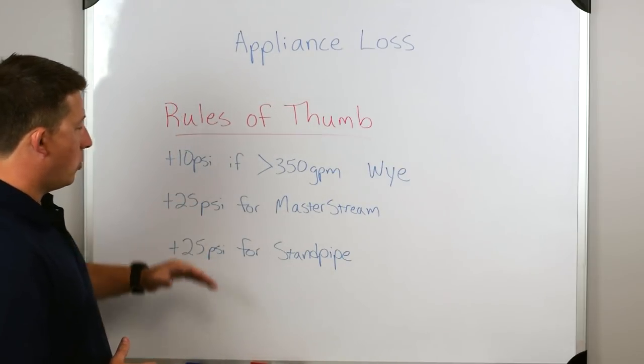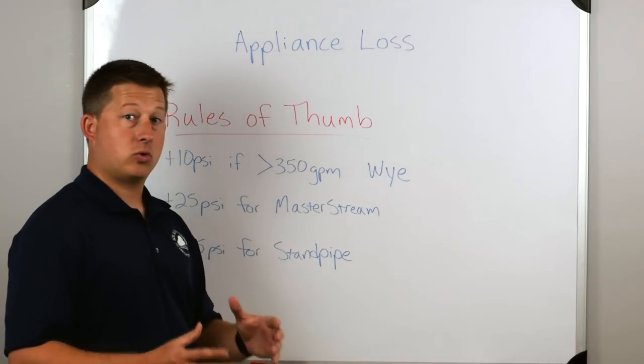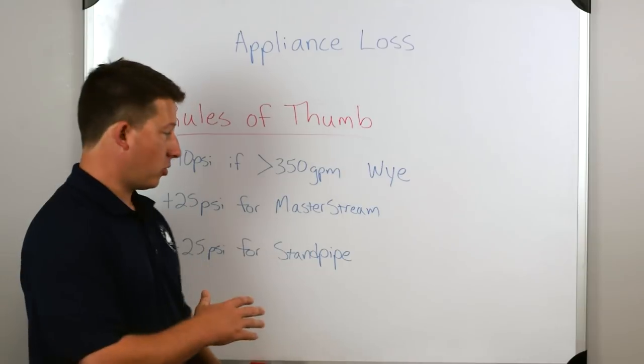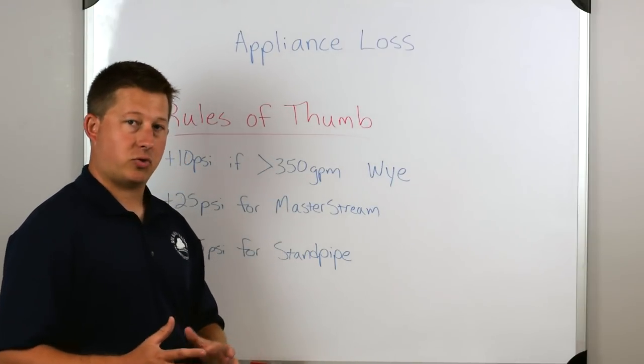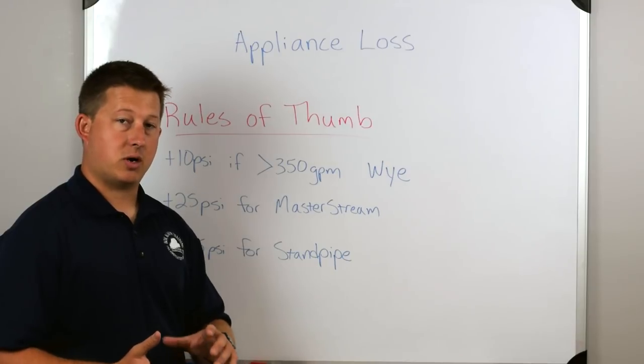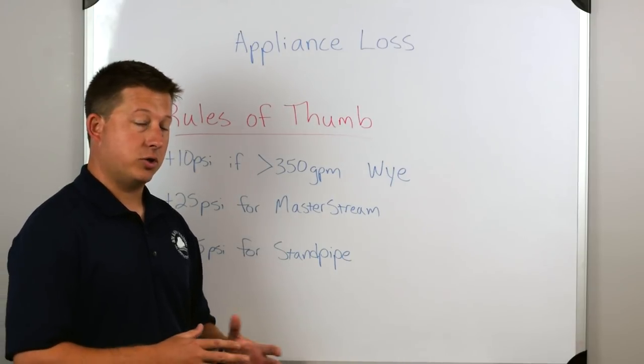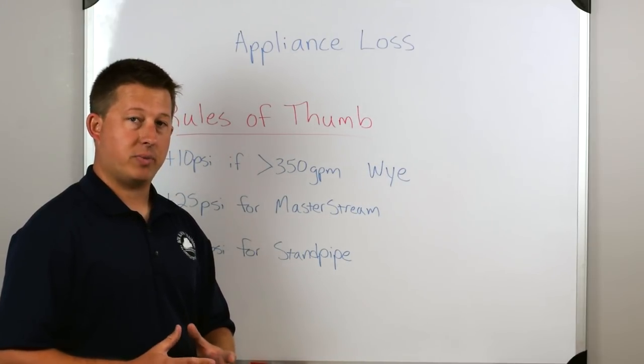The next thing is going to be we add 25 PSI for a master stream regardless of the flow. That's a rule of thumb that's in a lot of textbooks. However, when you look at this rule, you need to look at the master stream that you're using. There's a lot of master streams, rapid attack monitors, blitz monitors, and those kind of things that will tell you based on the manufacturer what you should or should not add. You're going to have to get out and flow test that to actually know what you're pumping.